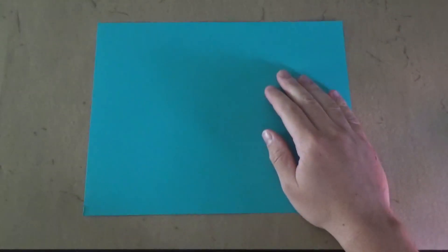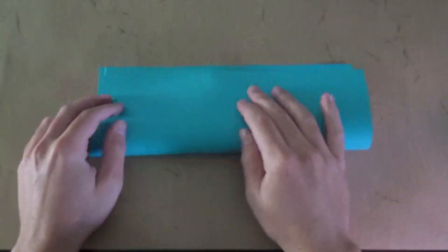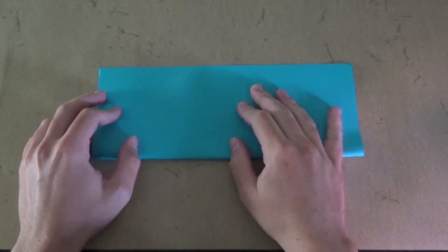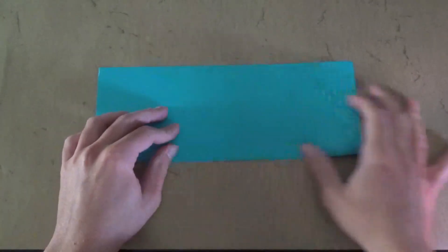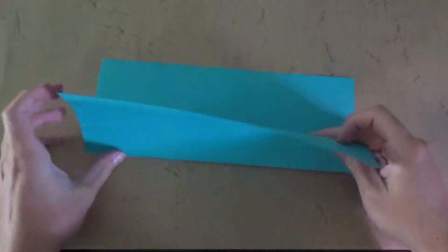I'm going to use an eight and a half by eleven inch rectangle of ordinary printer paper. The first step is we're going to fold it in half both ways, so the long way first, and this way.